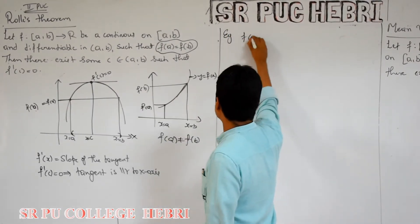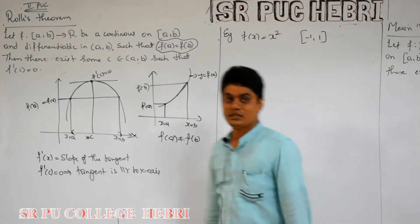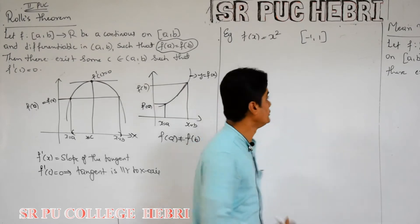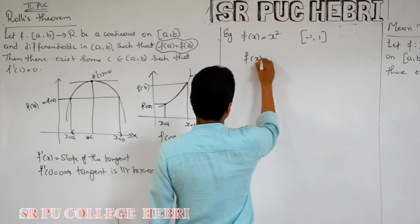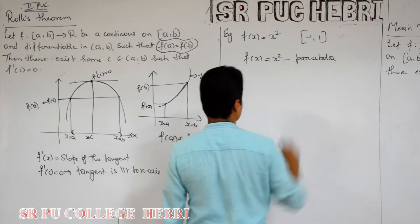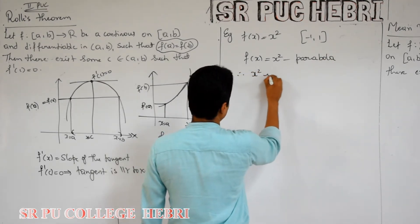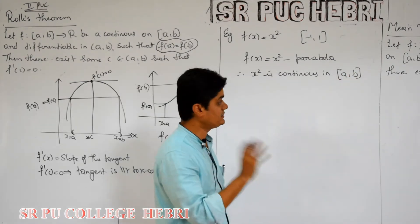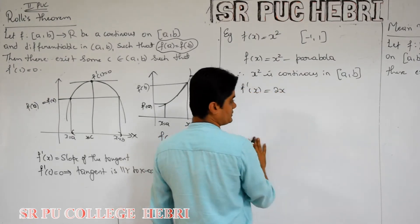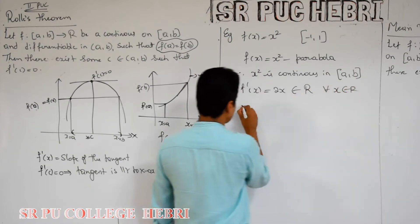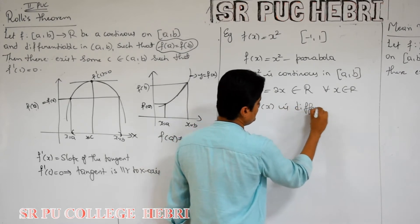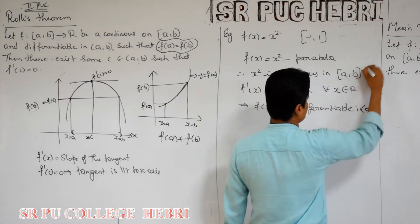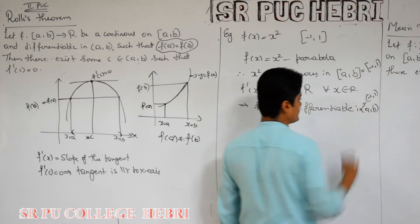For example, if f(x) = x² and the interval is [−1, 1]. Now I will show you how to verify whether Rolle's theorem holds or not without drawing any graph. First, check continuity. This function represents a parabola — specifically an upward-opening parabola — so x² is continuous everywhere. No doubt in that. Next, f'(x) = 2x, which belongs to ℝ for all x ∈ ℝ, so f(x) is differentiable in the open interval (−1, 1).